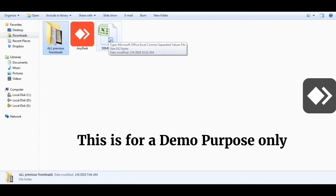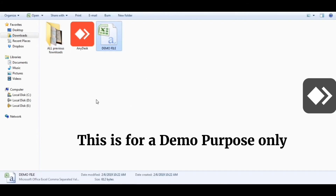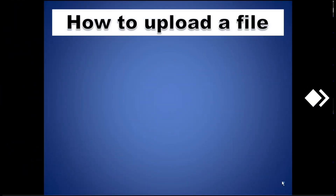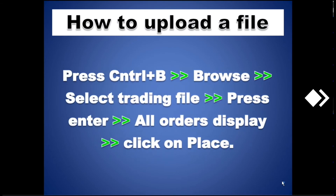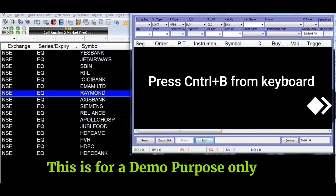This file will be easy to search. To upload a file, press Ctrl+B from your keyboard, then click on the browse option, then select your trading file, then press Enter from your keyboard. All orders will display, and at last click on Place. After this you will log in to the software, and in this software press Ctrl+B.